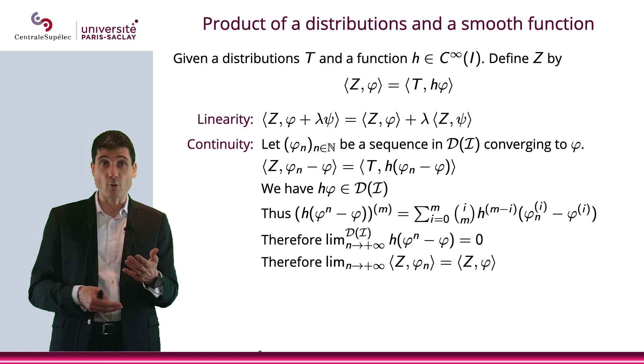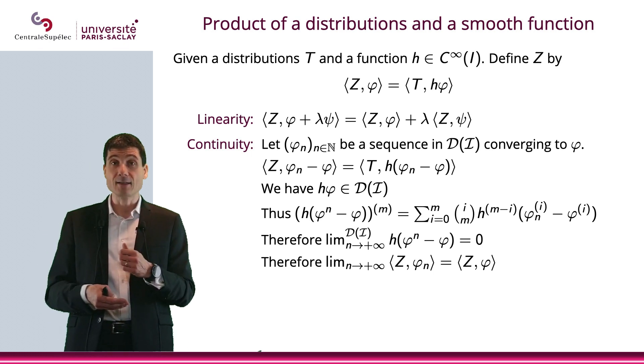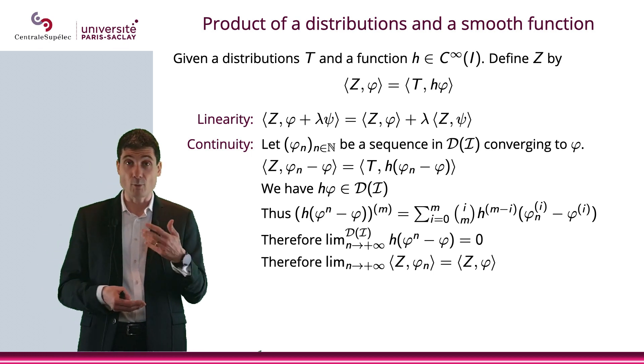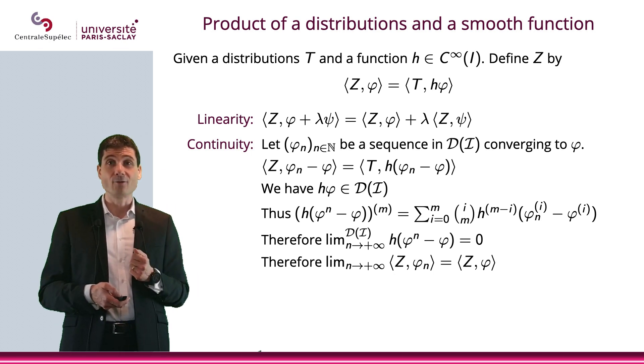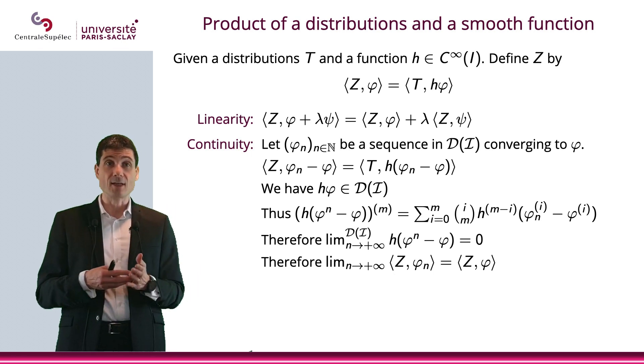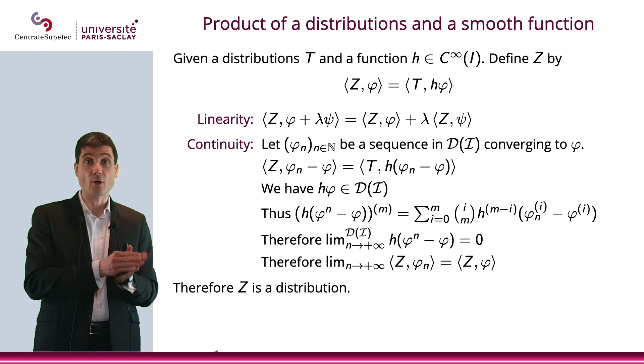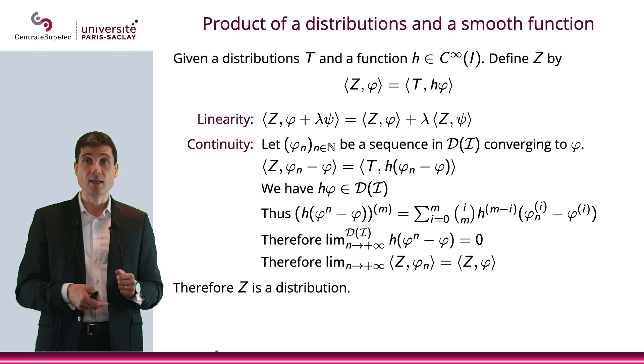So what we will have is that h times (φₙ minus φ) will go to zero in D(I) as a consequence. And therefore, Z applied to φₙ will converge towards Z applied to φ. In other words, what we have is that Z is both linear and continuous. It is a distribution.